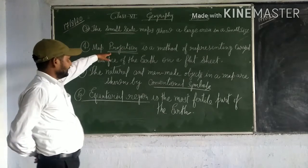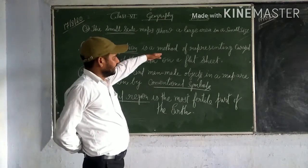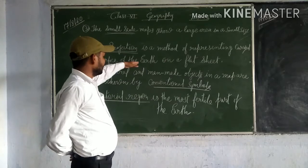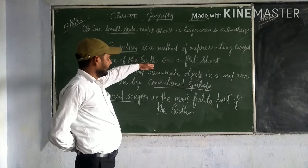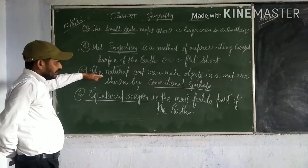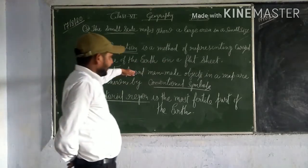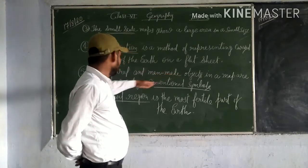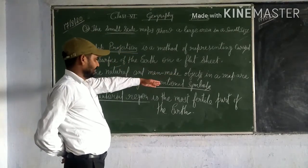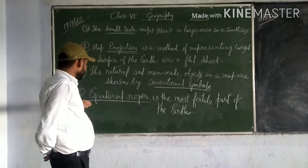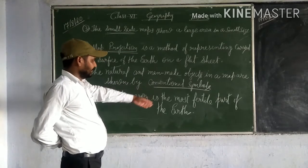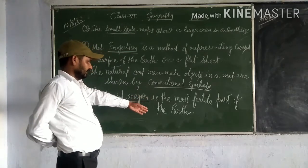Map projection is a method of representing the curved surface of the earth on a flat surface. The natural and man-made objects on a map are shown by conventional symbols. Equatorial region is the most fertile part of the earth.